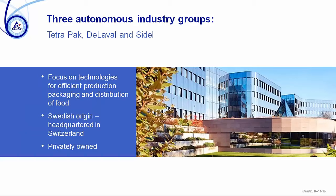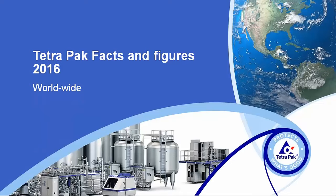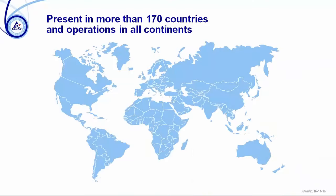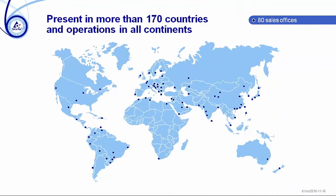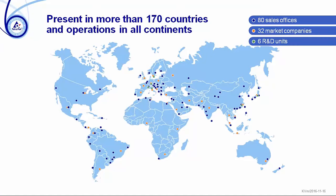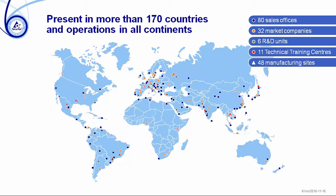The company focuses on technologies for efficient production and packaging of distributions of food. It's of Swedish origin but headquartered in Switzerland today. Like another big Swedish company, IKEA, it's totally privately owned. We are present in more than 170 countries and have operations on all continents — 80 sales offices around the world, 32 market companies, 6 R&D units, 11 technical training centers, and 48 manufacturing sites.